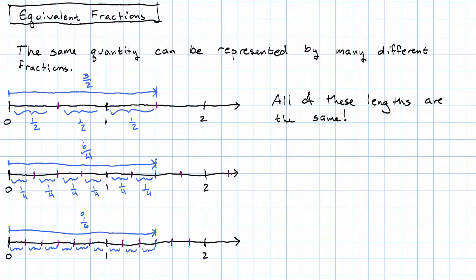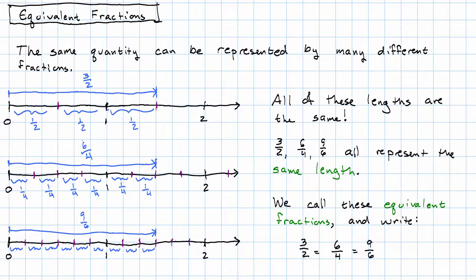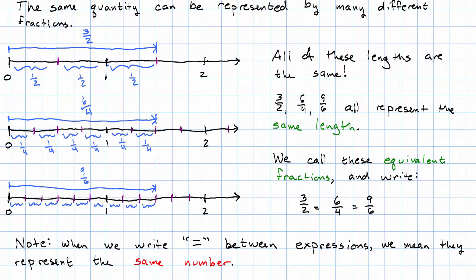That means that the fractions 3 halves, 6 fourths, and 9 sixths all represent the same length. We call fractions like this — that represent the same length, or thinking in terms of counts, the same quantity — equivalent fractions. And when we have equivalent fractions, we can write equal signs between them. In general, whenever we write equal signs between expressions, we mean that they represent the same number.